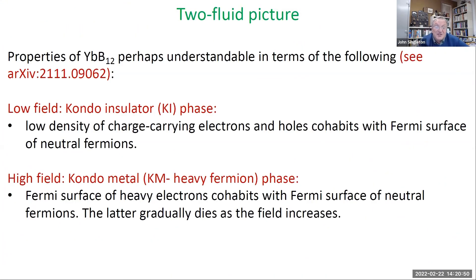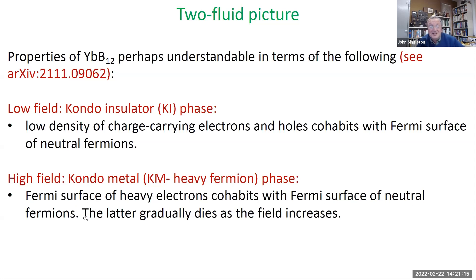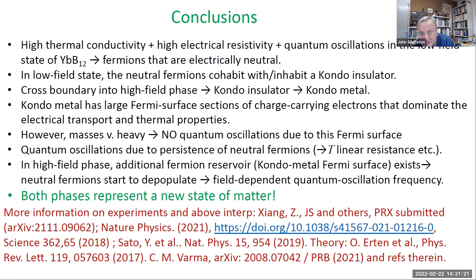The properties of ytterbium dodecaboride are probably understandable as follows. In the low field phase, it's a two-fluid picture: a low density of charge-carrying electrons and holes cohabiting with a Fermi surface of neutral fermions. In the high field metallic state, there's a Fermi surface of heavy electrons cohabiting with a Fermi surface of neutral fermions, and they gradually get killed as we increase the magnetic field. I'd like to thank you for your attention — this medium means I can't see your eyes glazing over, so I hope some of you did stay awake. I'll hand over to Mun now for questions.